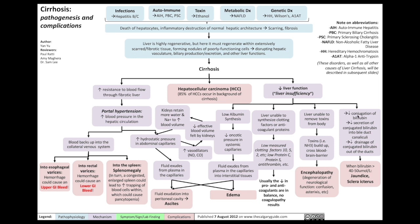Fourth, liver insufficiency results in reduced conjugation of bilirubin and reduced secretion of conjugated bilirubin into the bile duct, as well as reduced drainage of conjugated bilirubin out of the bile ducts. All of these factors result in an elevated bilirubin level, and when it exceeds 40 to 50 micromoles per liter, this results in jaundice and scleral icterus — yellowing of the skin and the whites of the eyes.